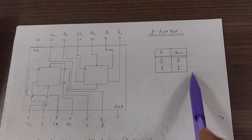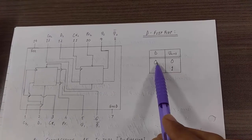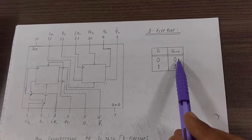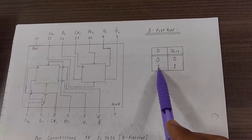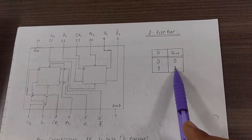This is the truth table for D flip flop. For data 0, when we apply clock pulse, we should get output as 0 and for data 1, we should get output 1 after the application of clock pulse.